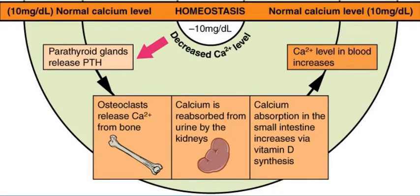When the blood calcium levels dip below 10 milligrams per deciliter, the parathyroid glands will release their hormone, referred to as PTH — parathyroid hormone. PTH targets the osteoclasts and causes them to become more active, which breaks down more bone matrix and releases more calcium into the blood. PTH also targets the kidney, causing reabsorption of calcium from the urine back into the bloodstream. Through the kidneys, PTH also stimulates the small intestine to increase the uptake of calcium from the food being digested, all of which increases calcium levels in the blood back to normal.